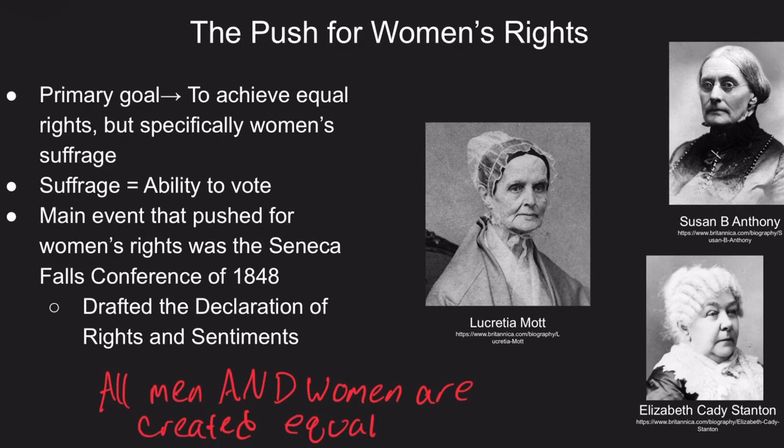This conference and the adoption of the Declaration of Sentiments was supported by many women and progressive men in attendance. Though the fight for women's rights would be delayed due to the Civil War, the work of women like Elizabeth Cady Stanton and Lucretia Mott paved the way for the adoption of the 19th Amendment, which gave women the right to vote in 1920.